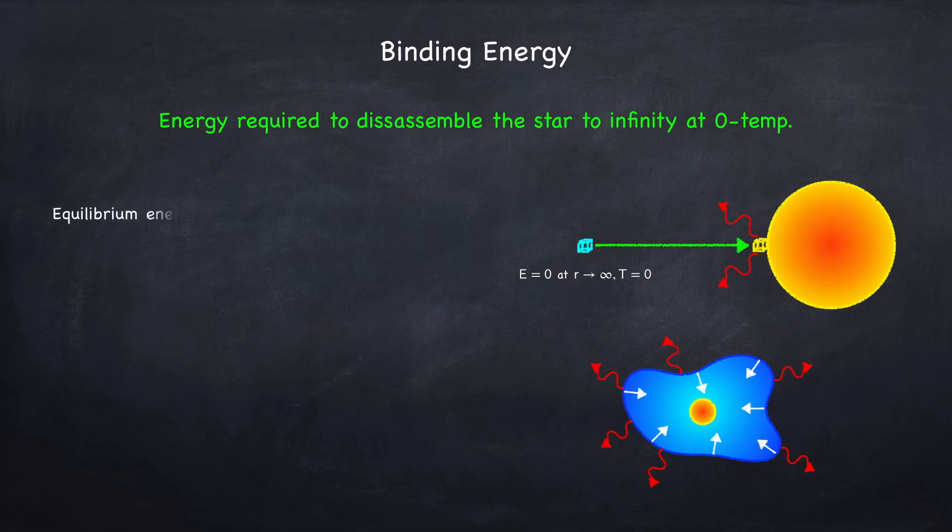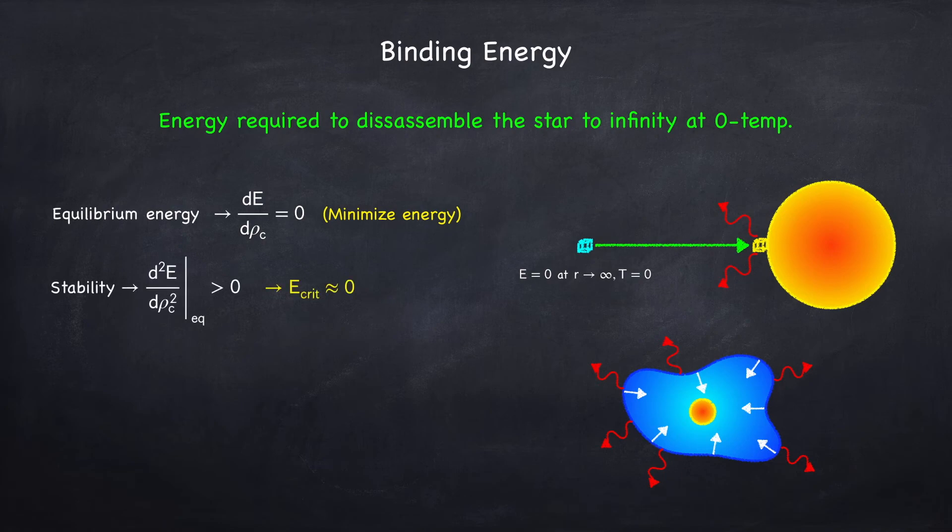In order to find the equilibrium energy, we had to minimize the energy with respect to the central density. And the criteria for stability was that the second derivative with respect to the central density was greater than zero at the equilibrium point.